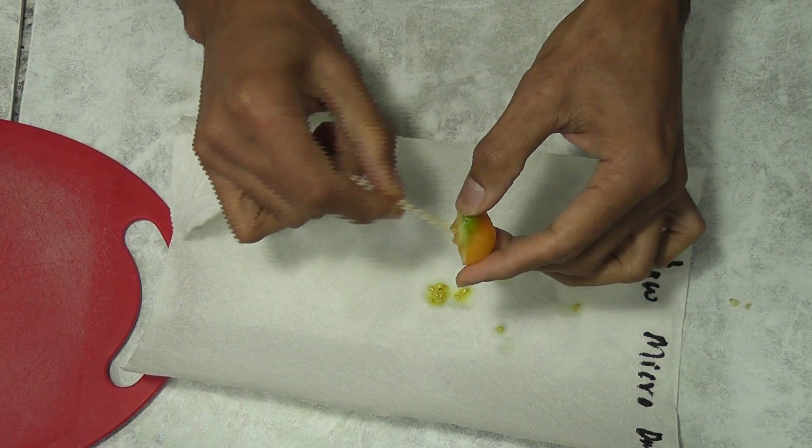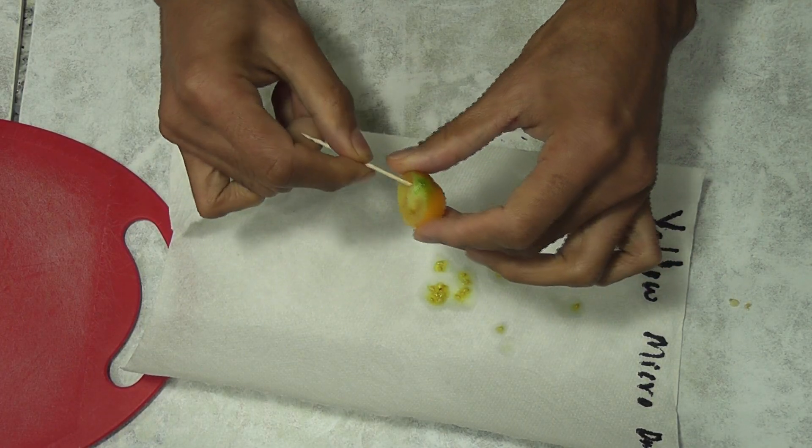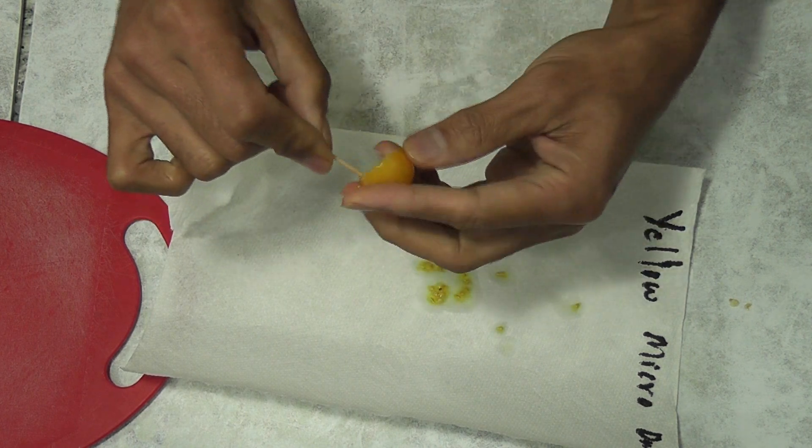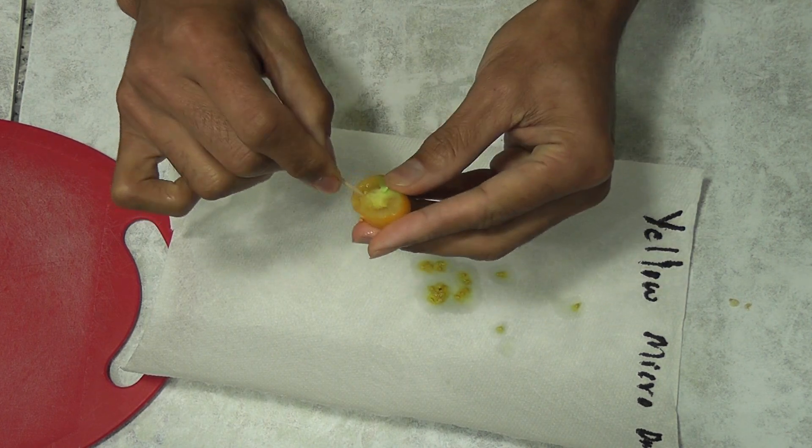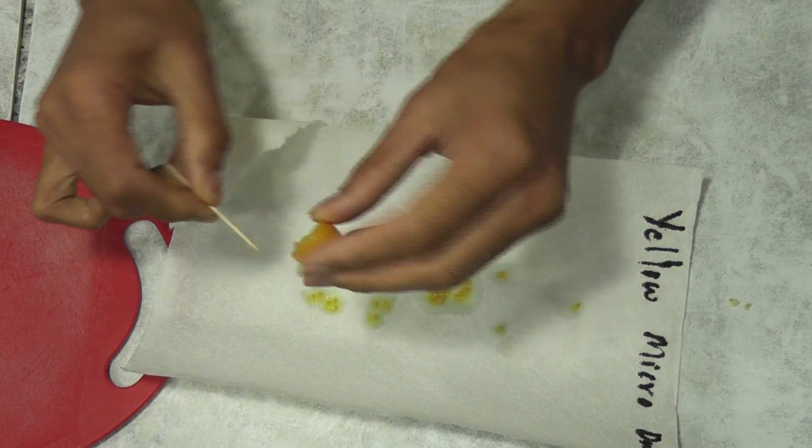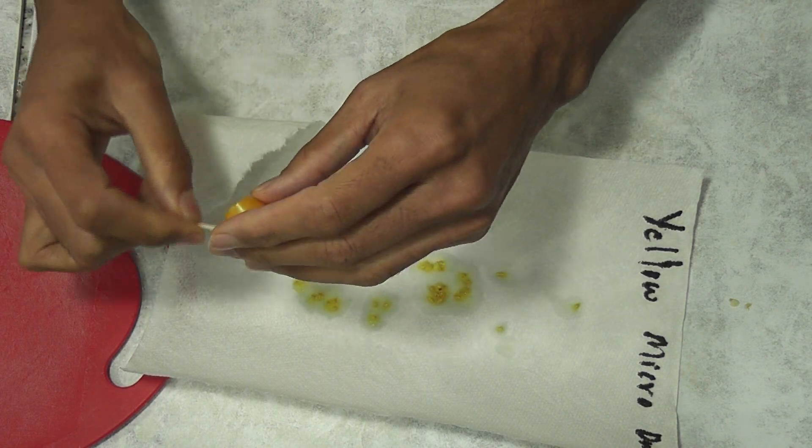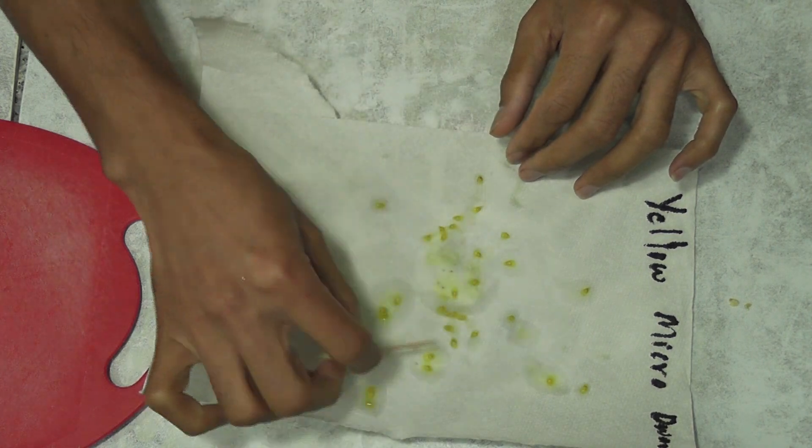Now I am repeating the same process for yellow microdwarf tomatoes. Since it is yellow variety, I picked a dark yellow tomato. It still has some green spots but that's okay. This is the best tomato I could find.